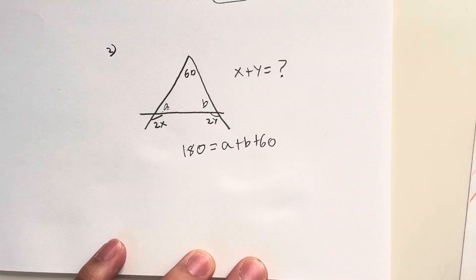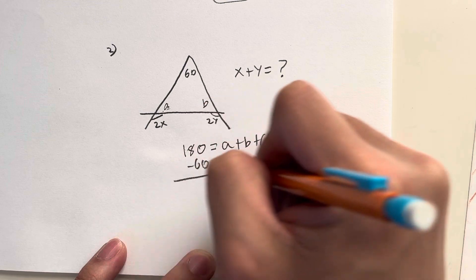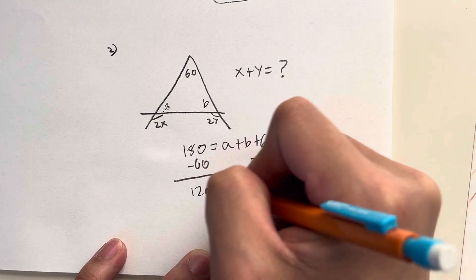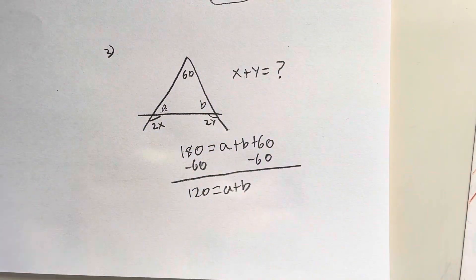1, 2, and 3. Now I could just minus 60 on both sides to simplify, giving 120 is equal to A plus B. Why is that important?